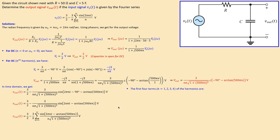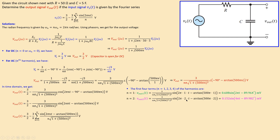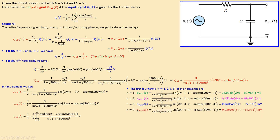For n = 1: V_out1 = 0.608 mV × sin(2πt − ~90°). For n = 2: substituting n = 2 gives a similar expression with the appropriate amplitude and phase. Likewise for n = 3 and n = 4. We now have four harmonic terms plus the DC term, and we can collect them all together to form the total output voltage expression.